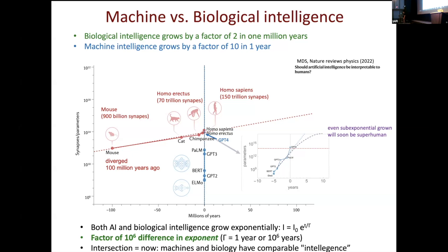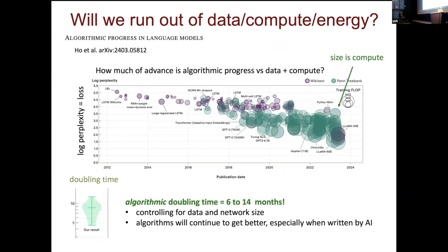We have to take this seriously because this is the future happening now. Should we expect them to keep growing? One might say we're going to run out of data and computing power — but that's not really true. There was an interesting study earlier this year trying to break down how much progress came from data and compute versus algorithmic advances. They found the algorithmic doubling time: holding data and compute the same, the performance doubles in roughly eight months to a year from algorithmic improvement alone. So even if we never get any more data, these machines are still going to get better just by algorithmic improvement.